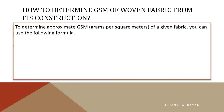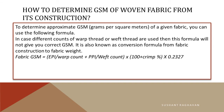To determine the approximate GSM (grams per square meter) of a given fabric, you can use the following formula. Note: if different counts of warp thread or weft thread are used, this formula will not give the correct GSM. It is also known as the conversion formula from fabric construction to fabric weight. Fabric GSM = (EPI ÷ warp count + PPI ÷ weft count) × (100 + crimp%) × 0.2327.